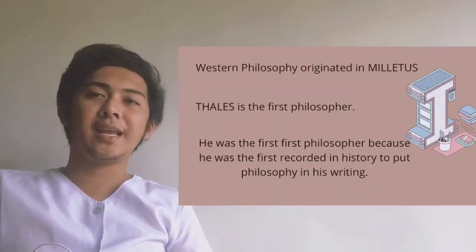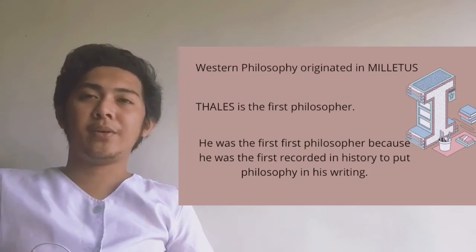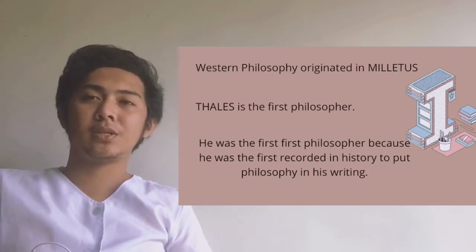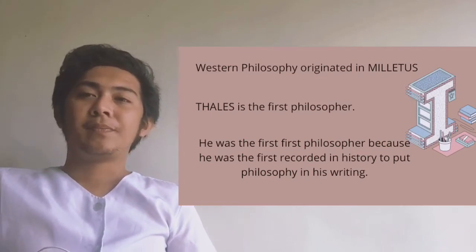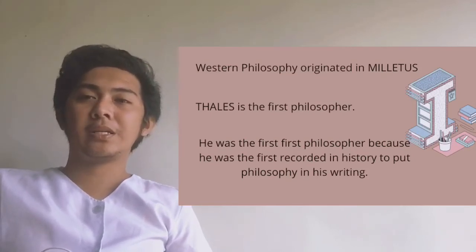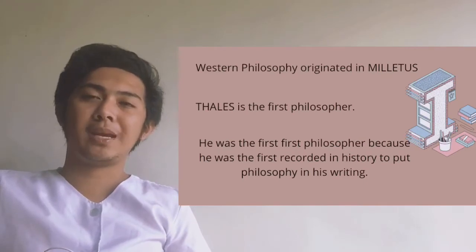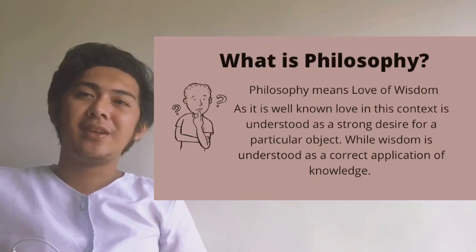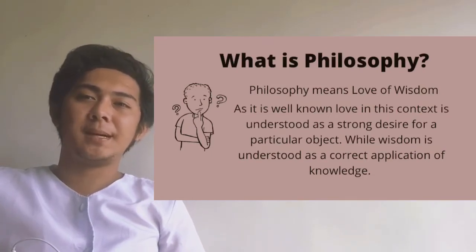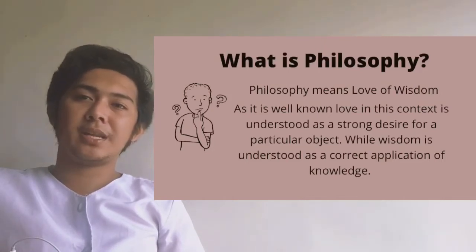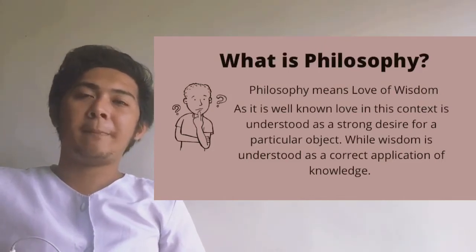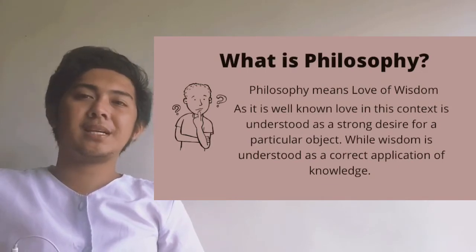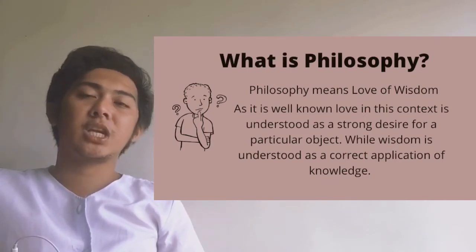Where did philosophy originate? Western philosophy originated in Miletus, and the first philosopher is Thales. He was the first philosopher because he was the first recorded in history to put philosophy in his writing. So, philosophy means love of wisdom. Love in this context is understood as a strong desire for a particular object, while wisdom is understood as a correct application of knowledge.